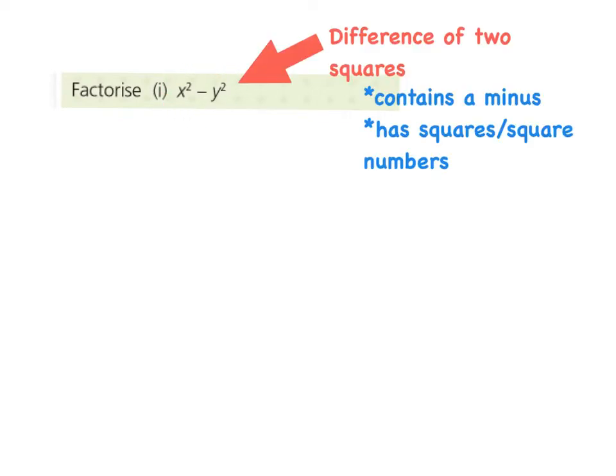Our first example here is factorize x squared minus y squared. You will notice that this is the difference of two squares because number one, it's got a subtraction here, so the difference, and number two, it's actually got squares here. This is what we refer to as the difference of two squares.